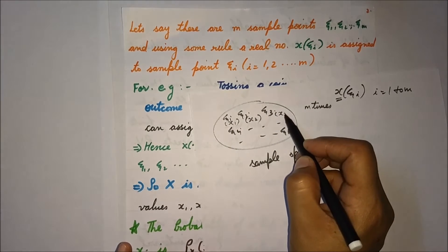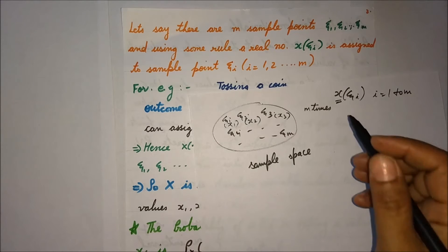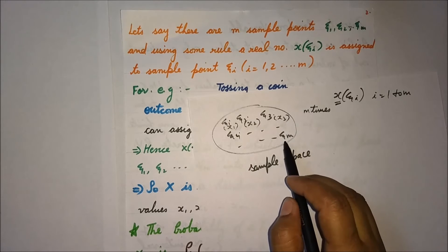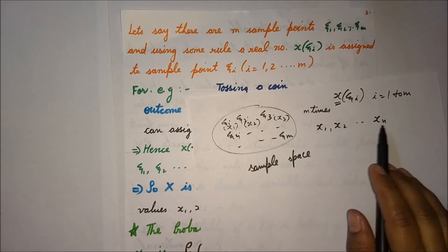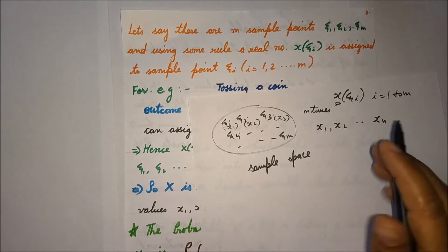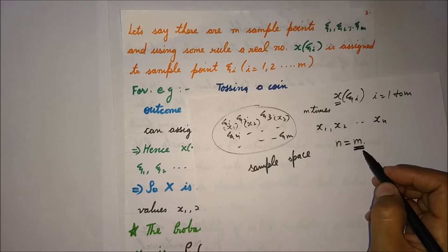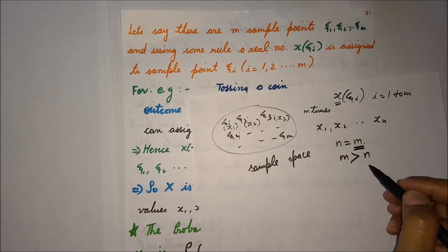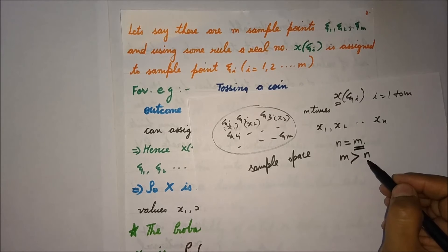The random variable takes different values x₁, x₂, x₃ for different outcomes. These assigned real numbers go up to x_n, but it is not necessary that n equals m. The number of times an experiment is performed gives m outcomes, and m can be greater than n, because it is possible that more than one sample point is given the same numerical value.